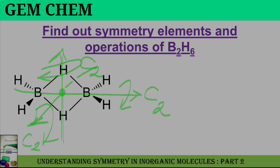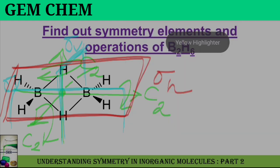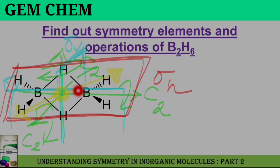B2H6 also has sigma V planes: one sigma V passes through this plane, and another sigma V passes from another direction. There is one sigma H plane lying throughout the horizontal plane of the molecule. There is also an inversion center I: if you consider a central point and travel in opposite directions, you arrive at equivalent atoms on both sides — both for the boron atoms and the bridging hydrogens. So B2H6 has an inversion center.